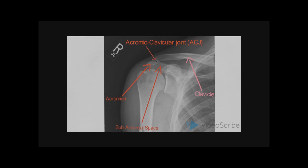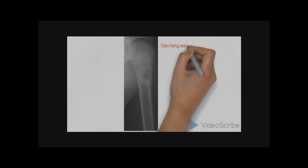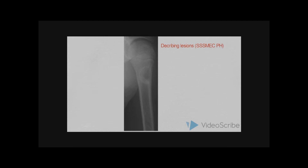We then move on to assessing the clavicle. When assessing the clavicle, we start at the articular surface of the acromioclavicular joint and follow the outlines of the body of the clavicle throughout. Once again, we are assessing for any periosteal reactions, any evidence of fractures, and any other abnormalities that may be present.